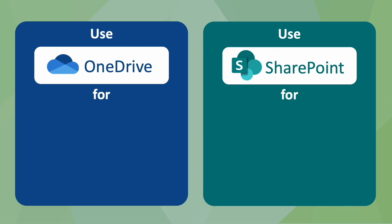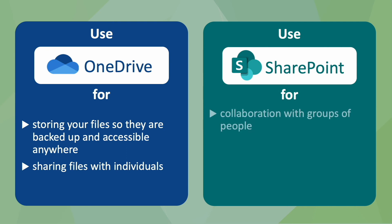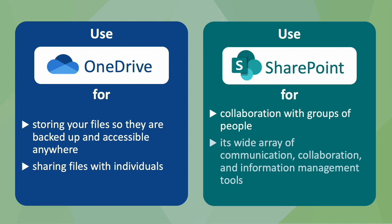So what do you use these two things for? Use OneDrive for storing your files so that they're backed up and accessible anywhere because they live in the cloud. Use OneDrive for sharing files with individuals. Use SharePoint for collaboration with groups of people, and use its wide array of communication, collaboration, and information management tools.